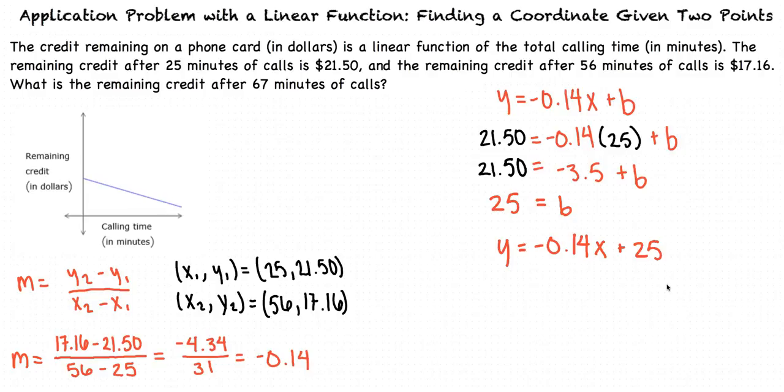We can now find the remaining credit after 67 minutes of calls by using x equals 67 in the equation. When we simplify, we get y equals 15.62. This tells us that the remaining credit after 67 minutes of calls is $15.62.